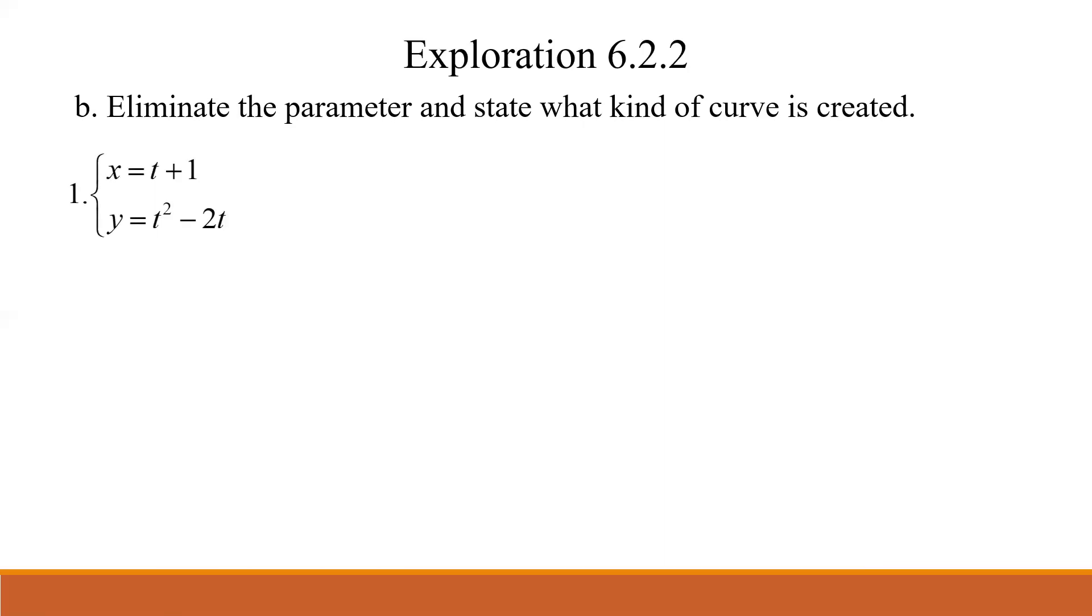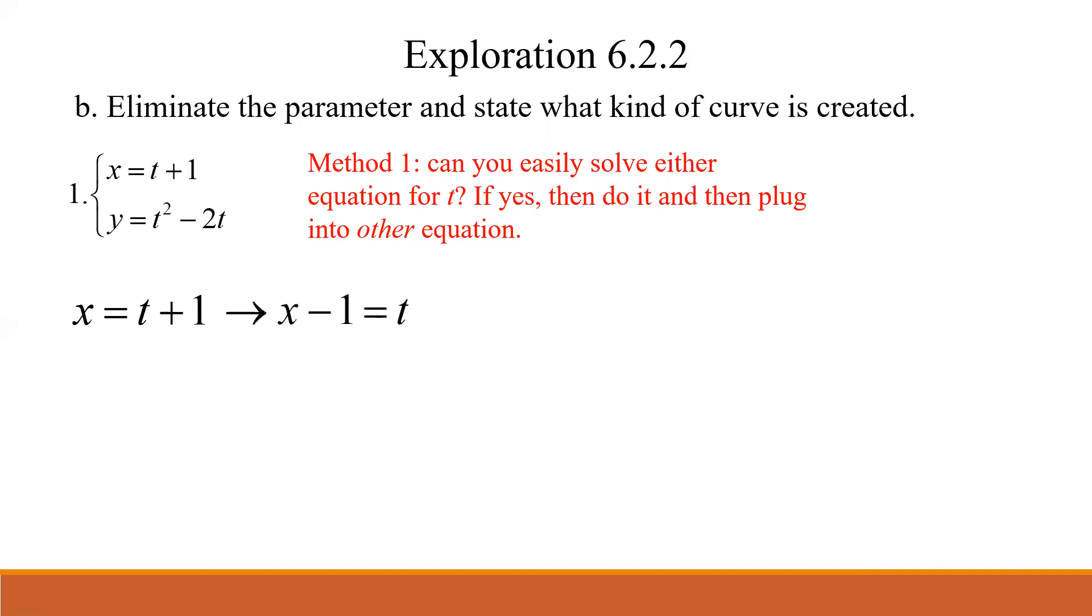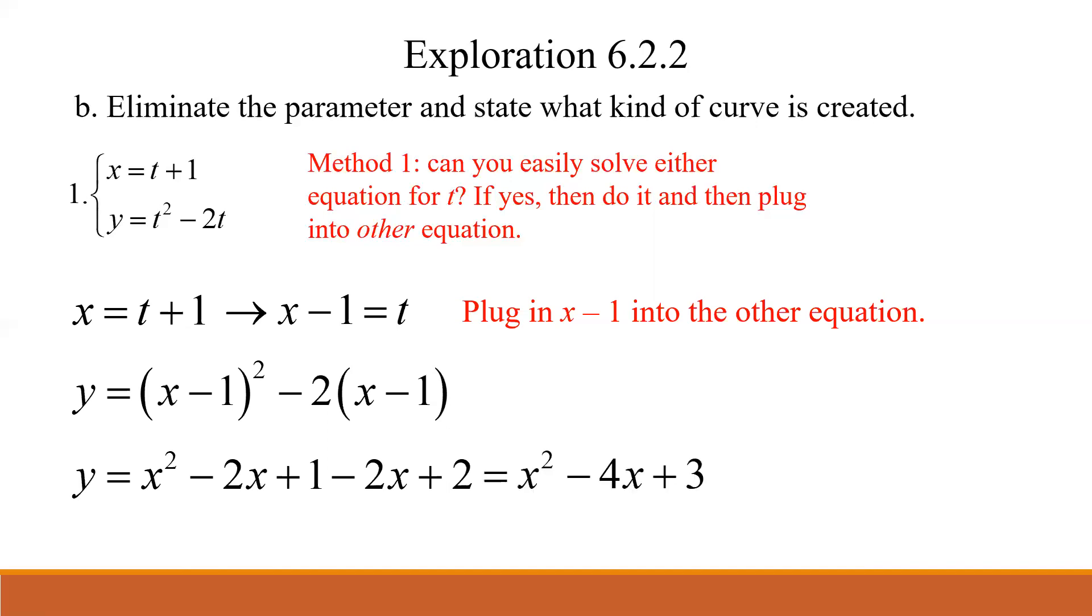So again, back on number one, and this is what I call kind of method one. So if you have kind of normal terms going on in here, can you solve one of those equations for t? You know, it doesn't matter which one, you can solve the x or y, whichever one's easier. But if you can solve one of those for t, then take that and plug it into the other equation, and all of a sudden you have eliminated the parameter. So in this case, I can take the top one, x equals t plus one, solve that for t. So t is equal to x minus one. And I'm going to plug x minus one into where t is in the other equation. And then of course, we're just going to clean that up. So we got x minus one squared is x squared minus 2x plus one, and then distribute the negative two, and then combine your like terms, and ends up being x squared minus 4x plus three, which sure enough is a parabola, which is what we saw when we graphed number one.